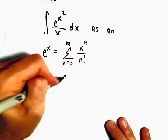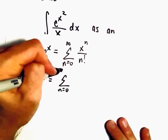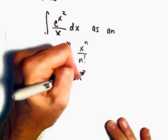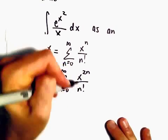So e^(x²) can be written as x² raised to the n, or x^(2n) over n factorial.